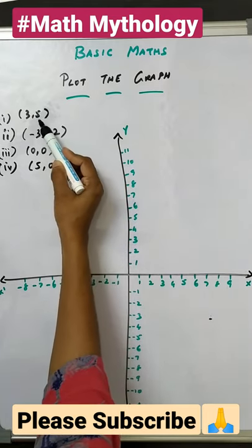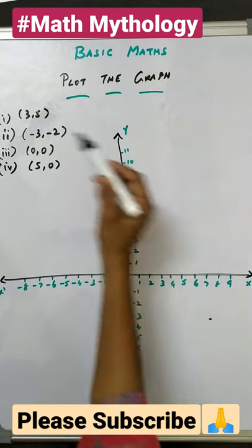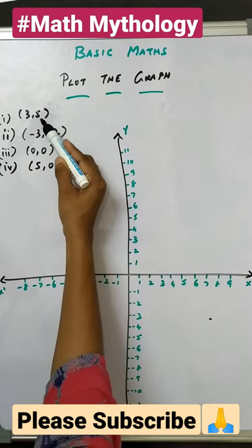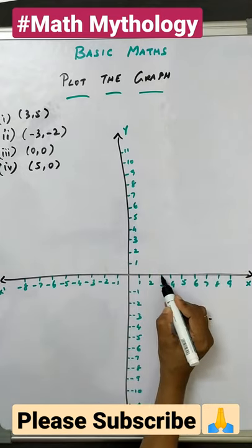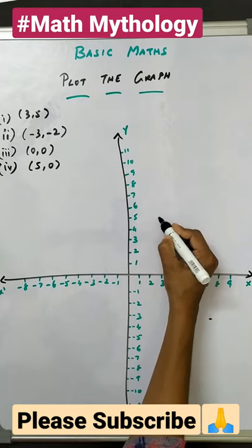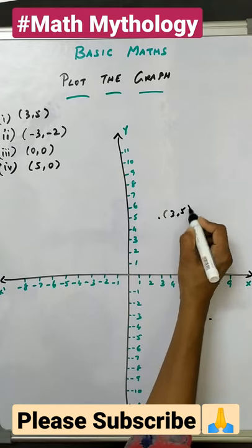Here both values are positive so it lies in the first quadrant. The first value x is 3 and y value is 5. So we get 3 comma 5 is here. This is the meeting point of both.